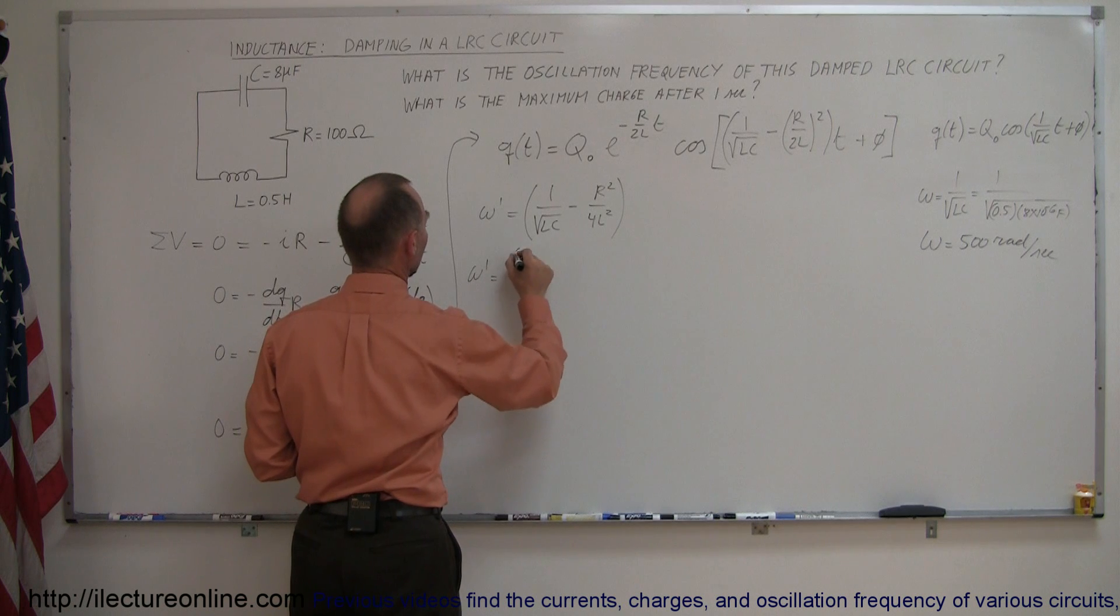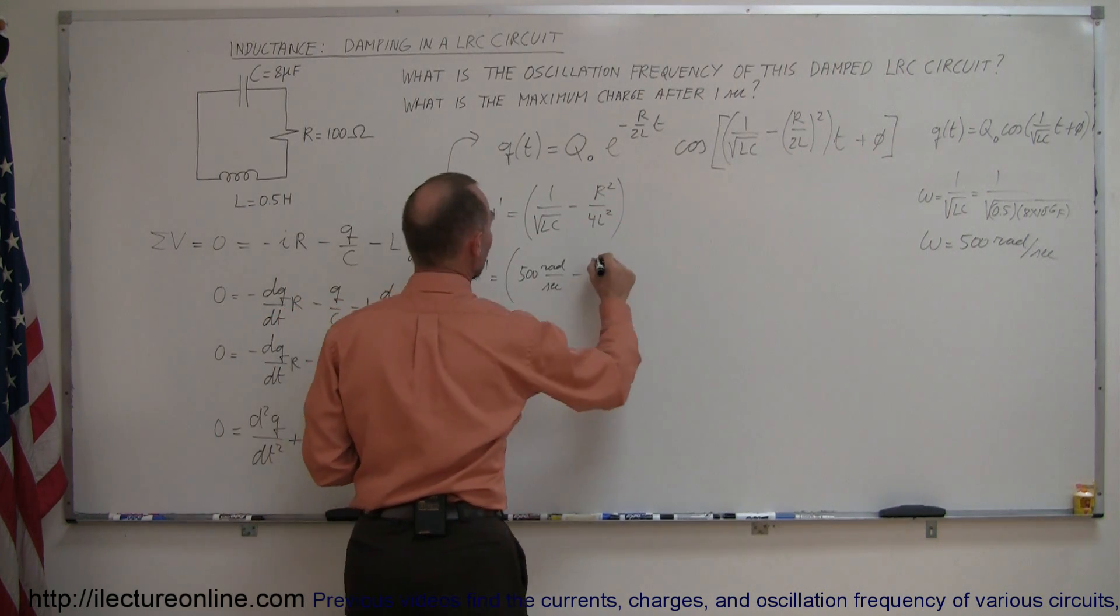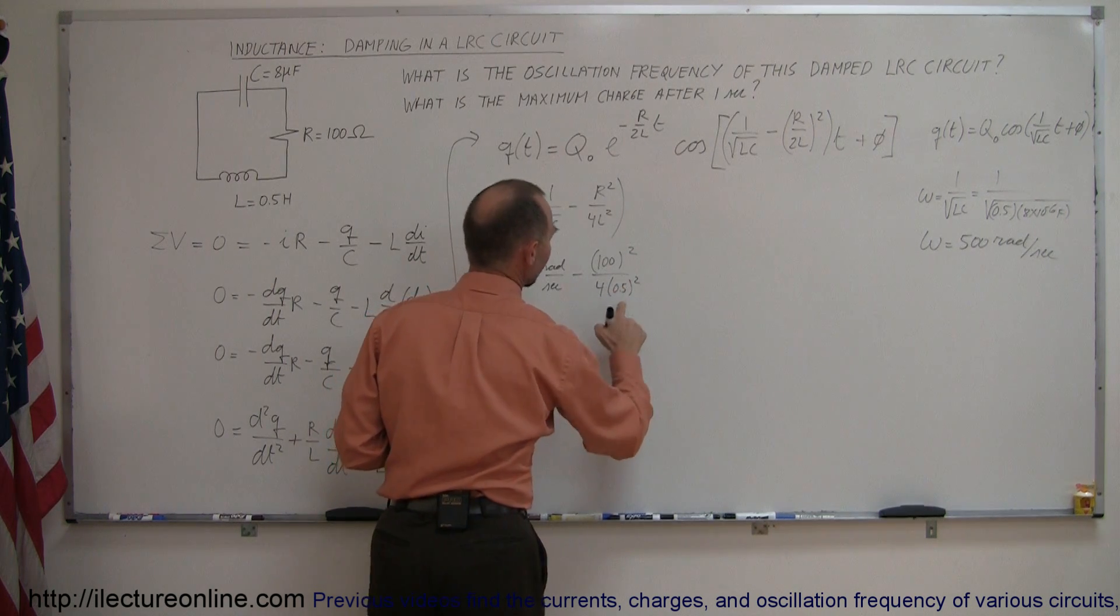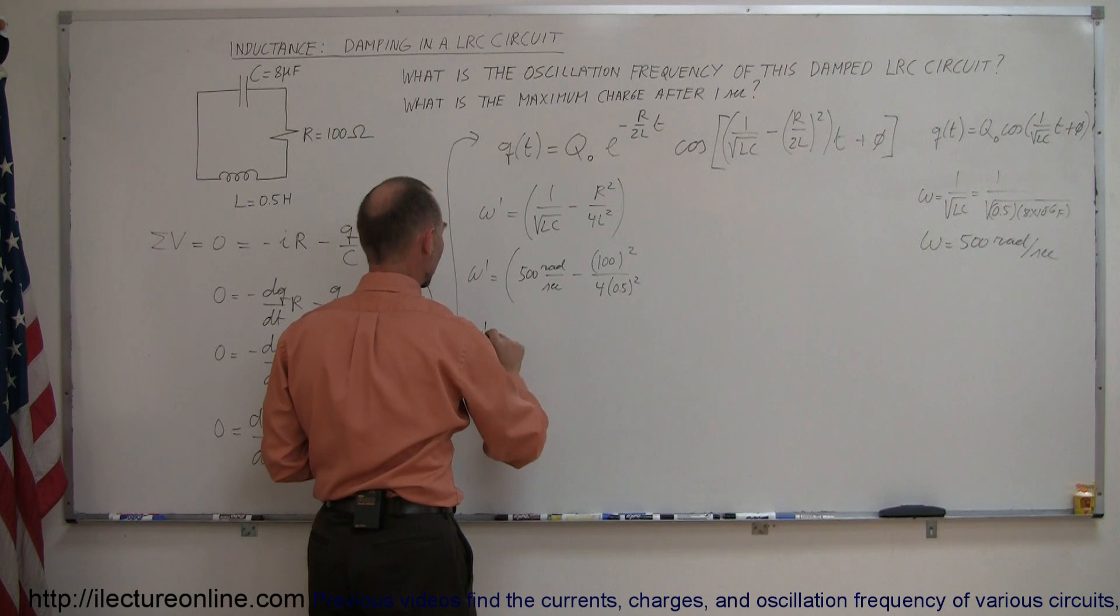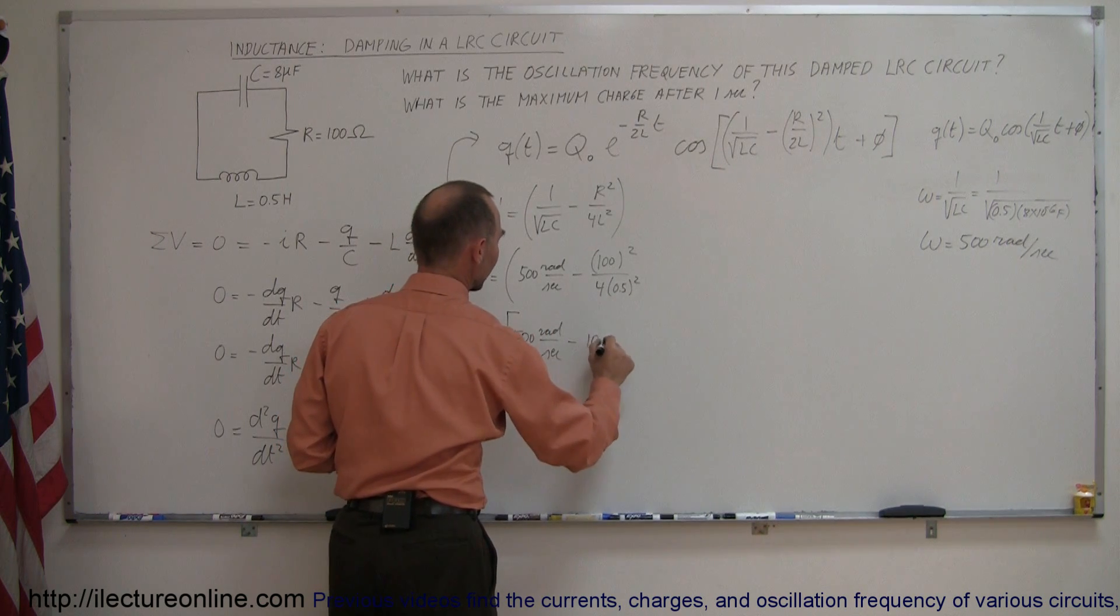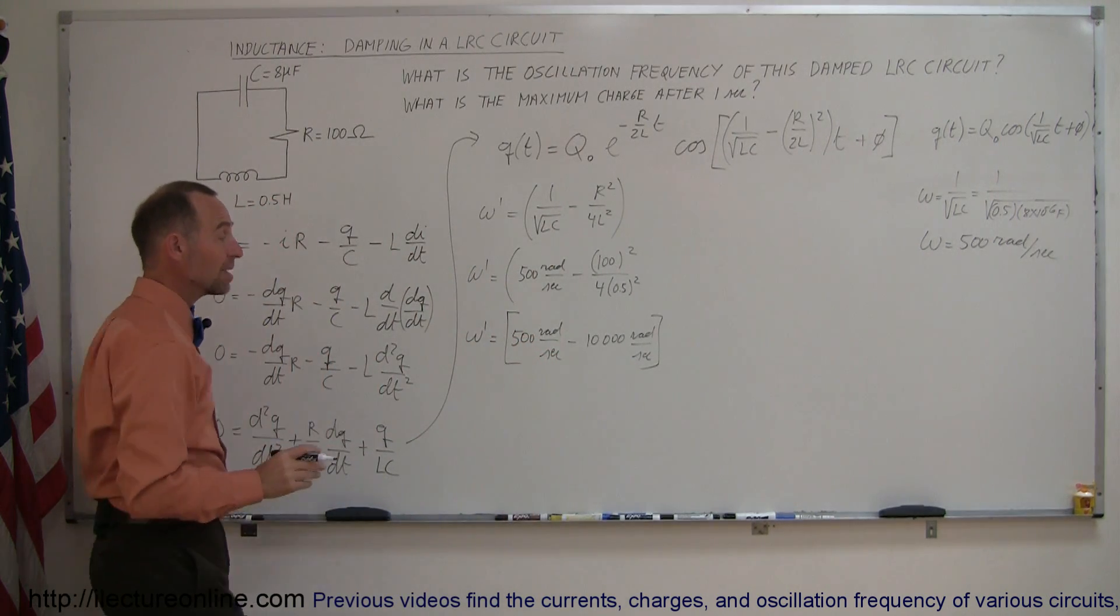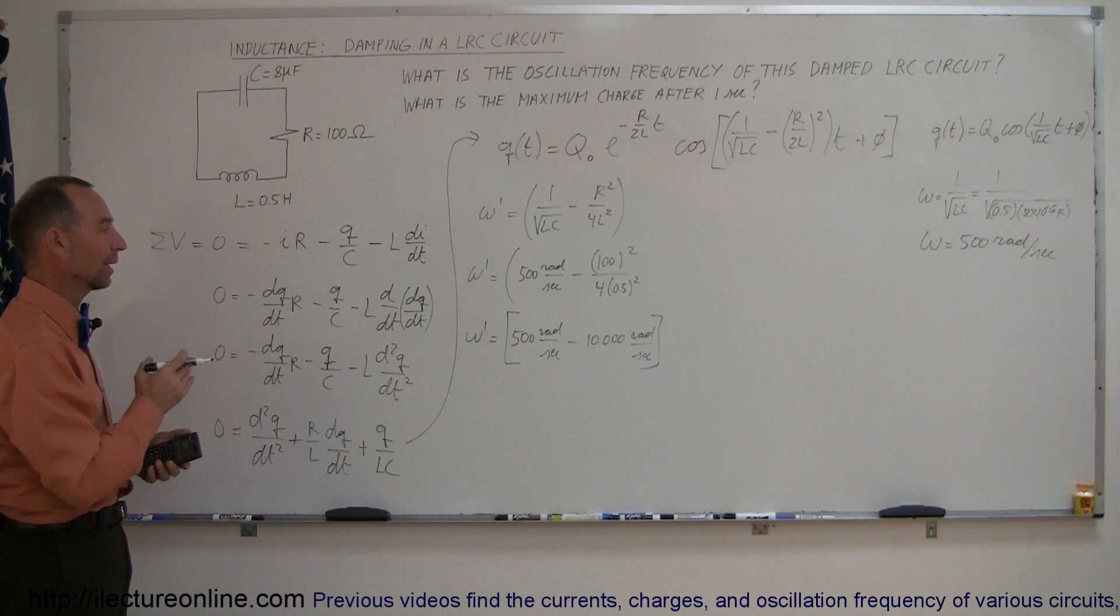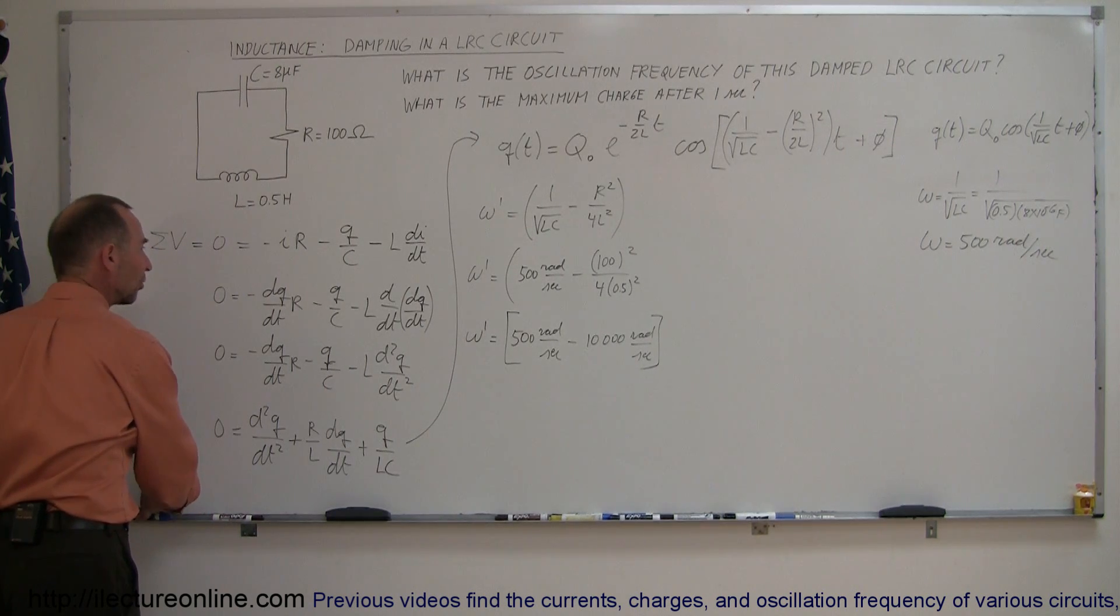Now how much will have slowed down based upon the damping factor here? Let's figure that out. That's ω prime is equal to, well we know that this was 500 radians per second minus R² so it would be 100² divided by 4 times L² which is 0.5². Now 0.5² is 0.25 that's a quarter times 4 which is 1 so this cancels out. So it would be ω² is equal to 500 radians per second minus 10,000 radians per second. Oh, what does that mean? That's an interesting result. What that means is that it's so damp that it's actually over damp. The 100 ohm resistor would almost instantly stop the current from flowing and you probably wouldn't even get a single oscillation going.